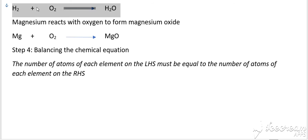Hydrogen atoms are balanced on both sides because here also there are two atoms and here also there are two atoms. But oxygen, number of oxygen atoms, they are not balanced. Here there are two atoms and here there is only one atom.